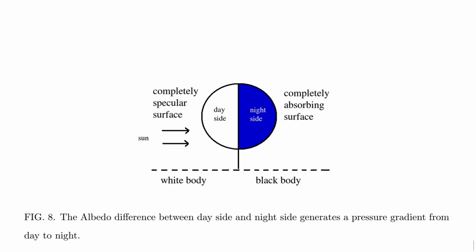Some of the more exotic explanations even involve the difference in albedo — basically the reflectivity of the planet — where we know that on the day side reflectivity is actually much higher whereas on the night side it's much lower, and the fact that the planet generates a kind of pressure gradient might actually increase the rotation yet again.